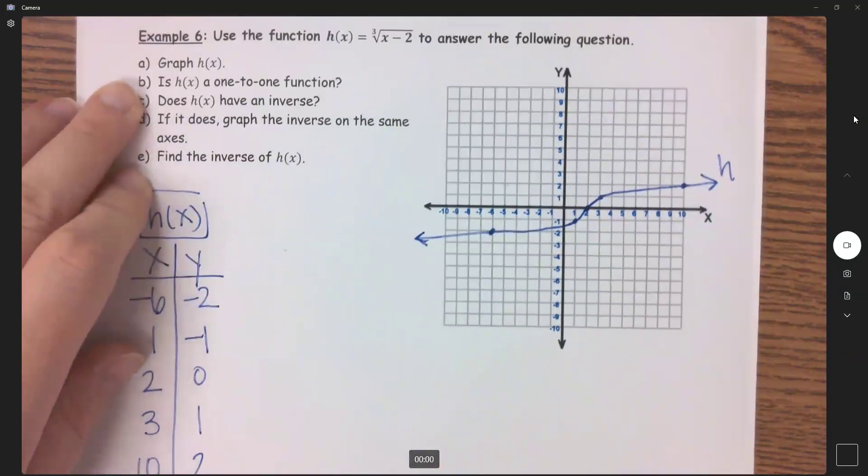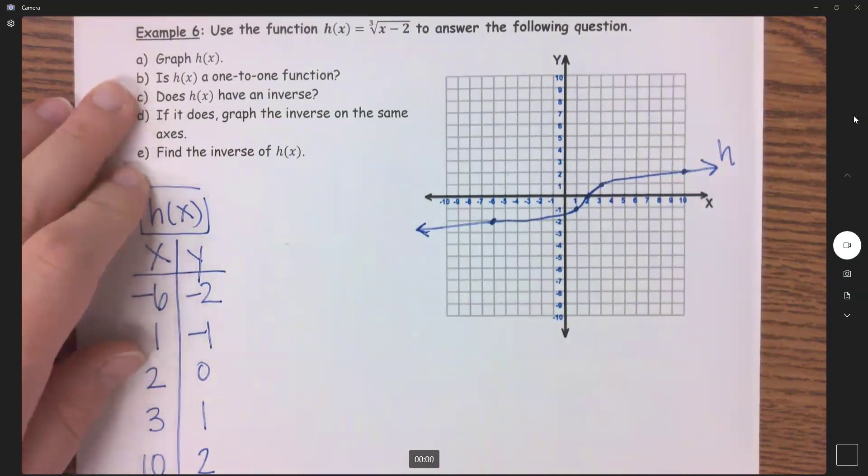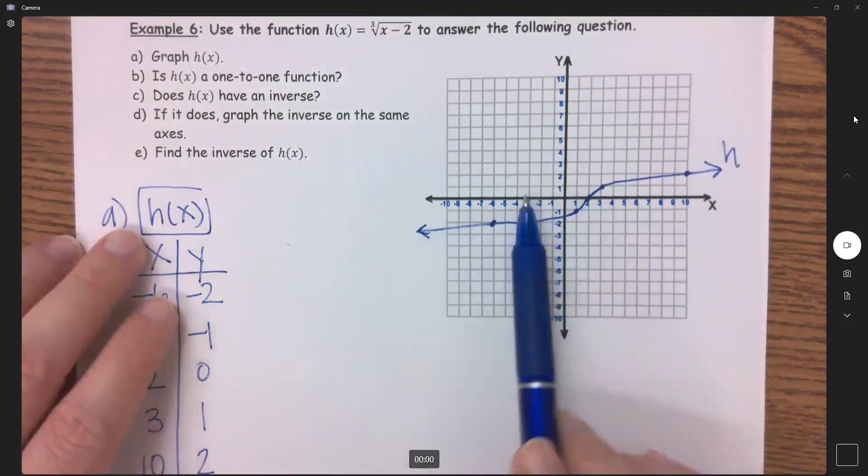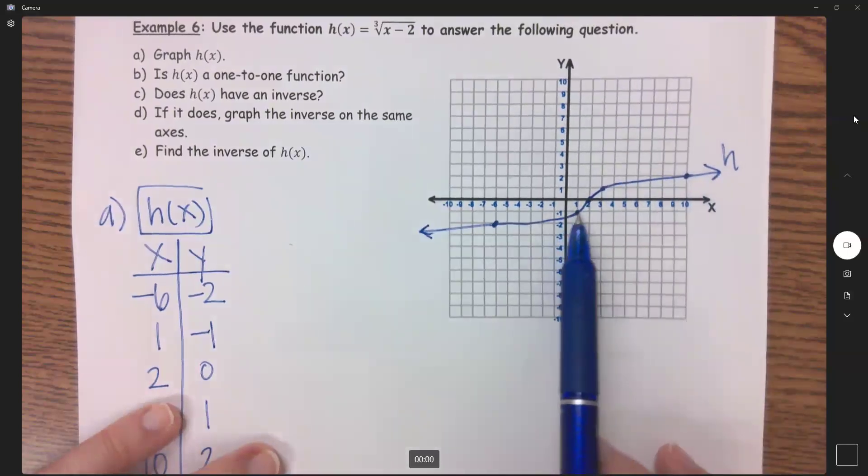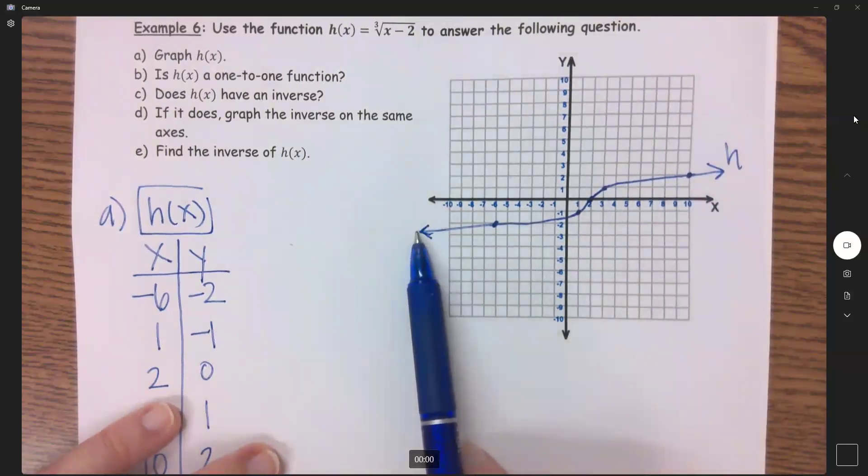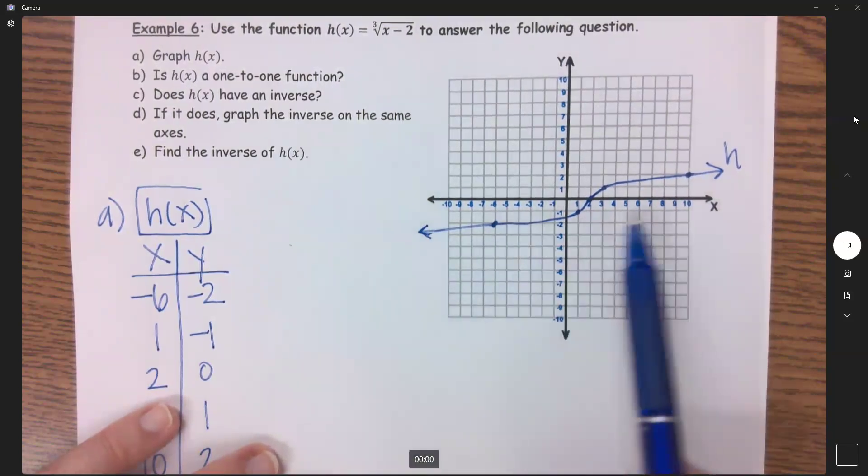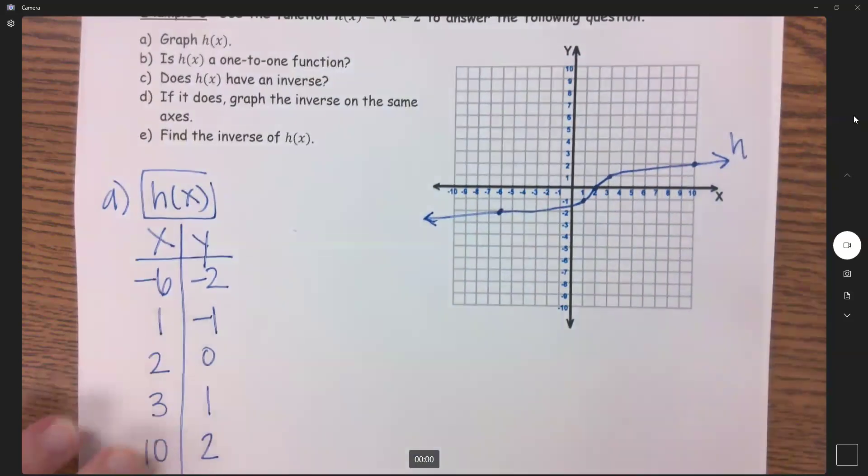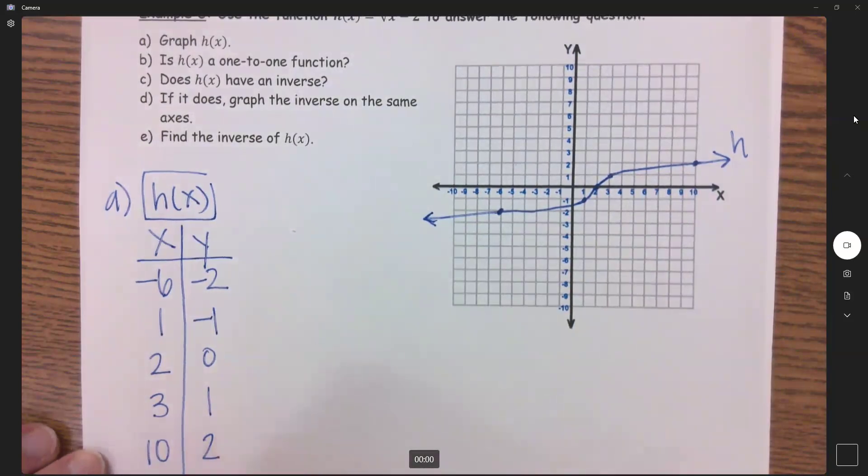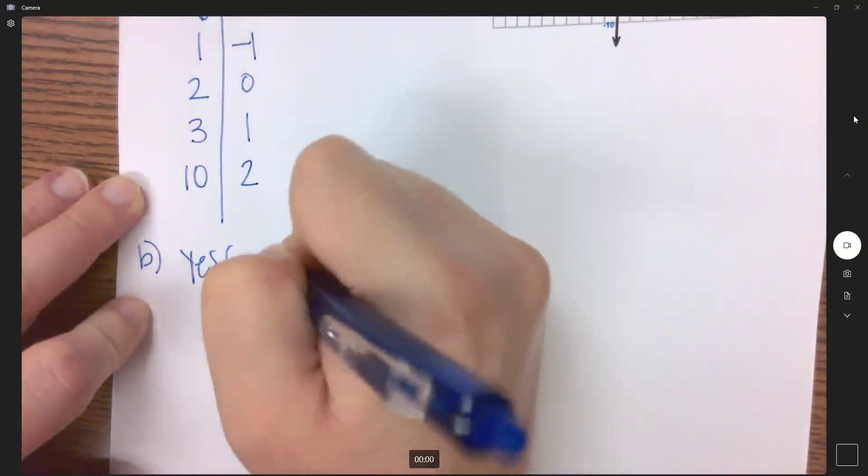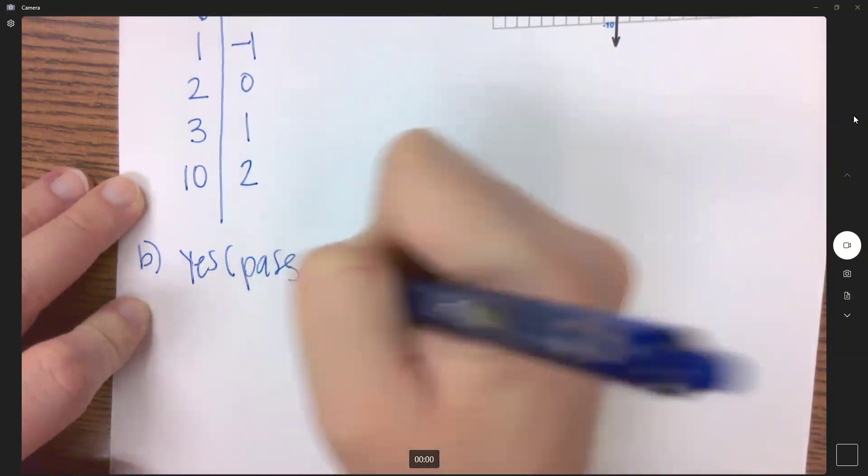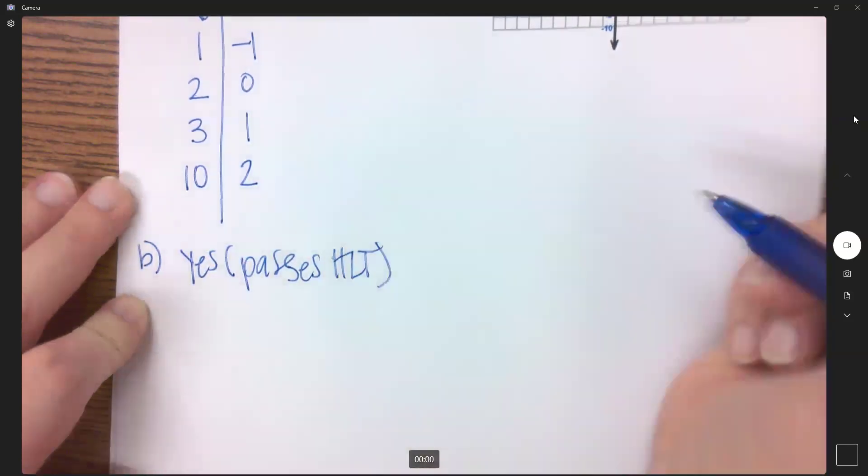Now part B wants to know, is this a one-to-one function? And you can see your horizontal line, it passes. Even though this goes pretty horizontal looking, it's still going down and going down and going up and going up. So B is yes, because it passes the HLT.